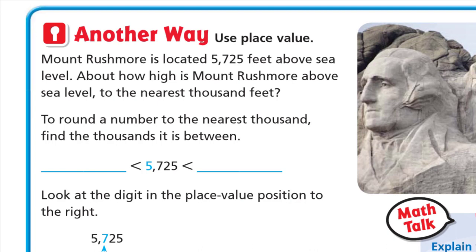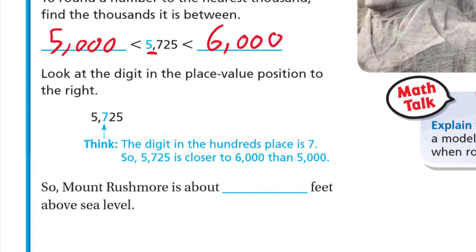Another way is to use place value. Mount Rushmore is located 5,725 feet above sea level. About how high is Mount Rushmore above sea level to the nearest thousand feet? To round to the nearest thousand, find the thousands it's between. 5,725 is more than 5,000 but less than 6,000. Look at the digit in the place value position to the right — to the right of the 5 we have 7.